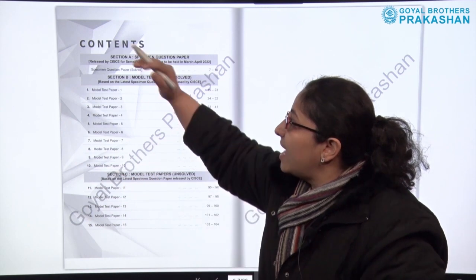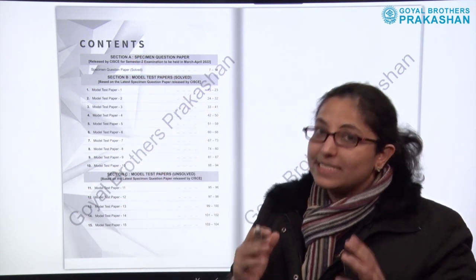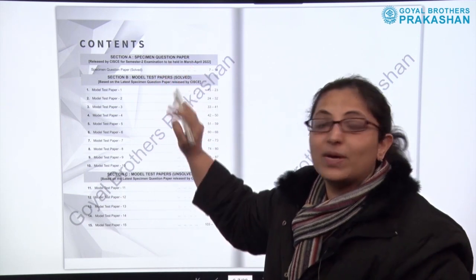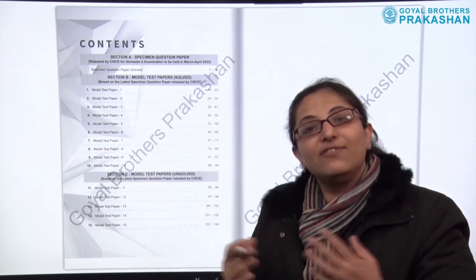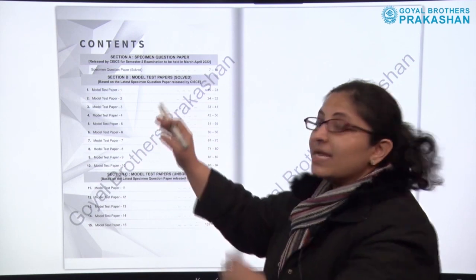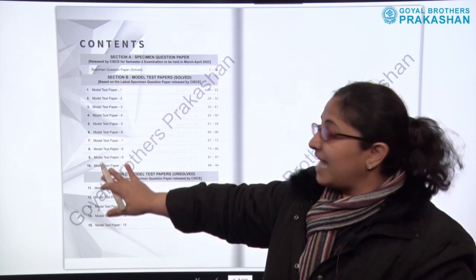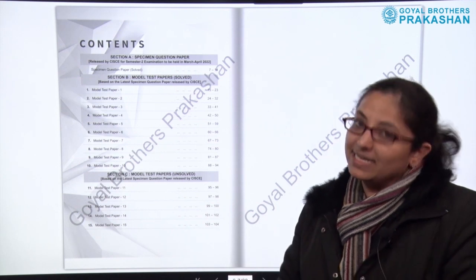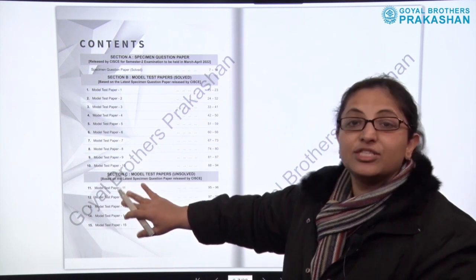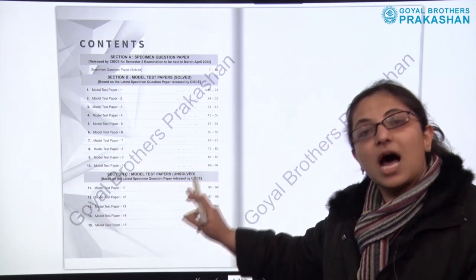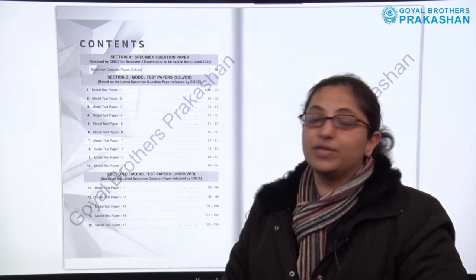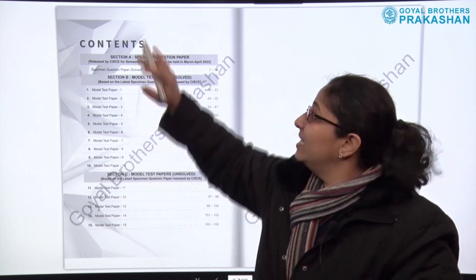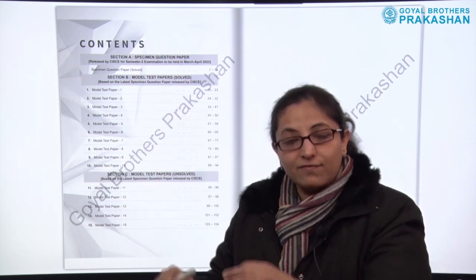In the contents, you can see there are three different sections. The book and the sections have been designed very thoughtfully. Section A is the specimen question paper — the solved paper released by the council itself. Section B is the model test papers; there are almost 10 model test papers which are solved, again based on the specimen question paper released by ICSE. Section C contains model test papers unsolved, for the practice of the students. There are five unsolved model test papers, again strictly based on the specimen question paper released by the council for this year's examination.